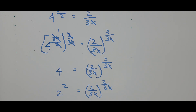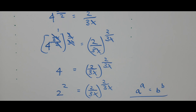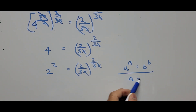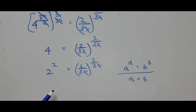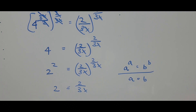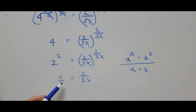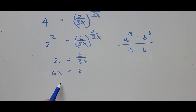If you notice, the base is the same as the exponent on both sides. By correspondence, we have a to the power of a equals b to the power of b, which means a equals b. So on our equation, 2 equals 2 divided by 3x. To find the value of x, we cross-multiply, giving us 6x equals 2.